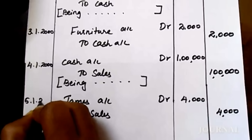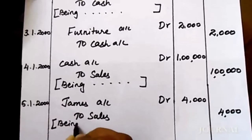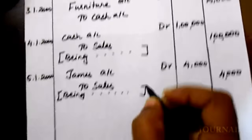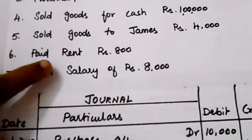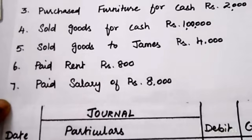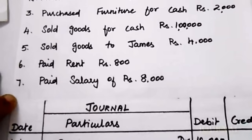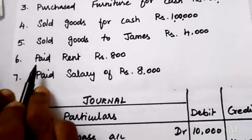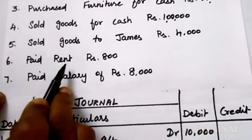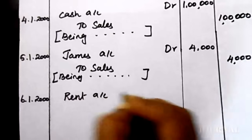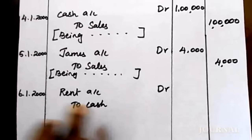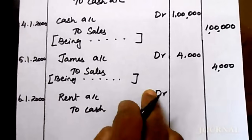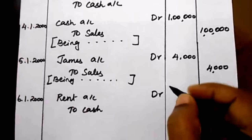On 6th January 2000, paid rent. Rent is an expense — it is a nominal account. What is the rule for nominal account? Debit all expenses and losses; credit all incomes and gains. When you pay rent, it is an expense, so debit rent. Cash goes out, so credit cash. Entry: rent account debit to cash — 800 rupees.